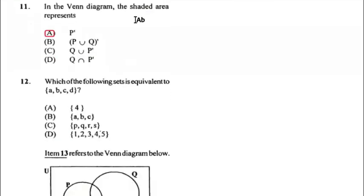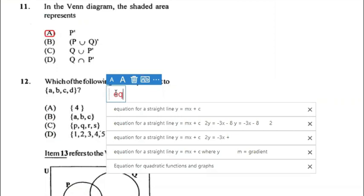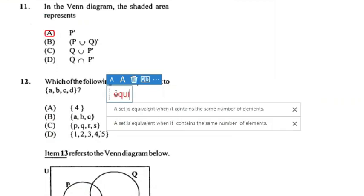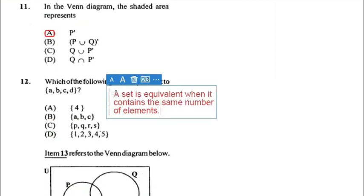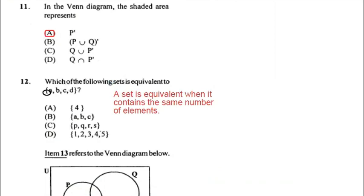Number twelve: which of the following sets is equivalent to {a, b, c, d}? A set is equivalent when it contains the same number of elements. The set {a, b, c, d} has four elements, and C is the only answer that also contains four elements. Therefore C is our answer.